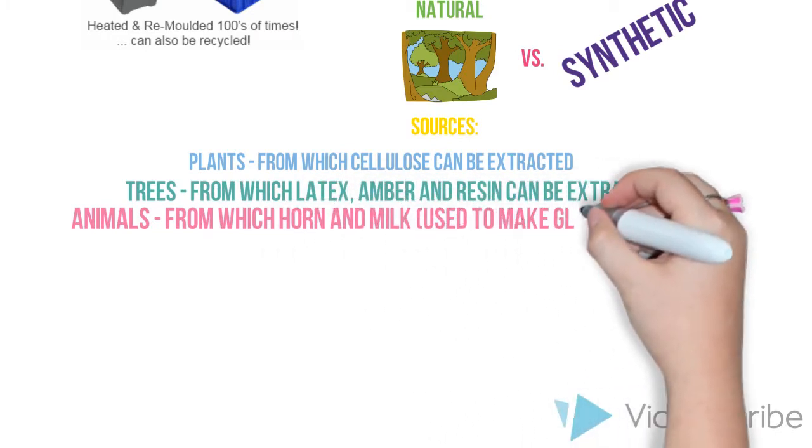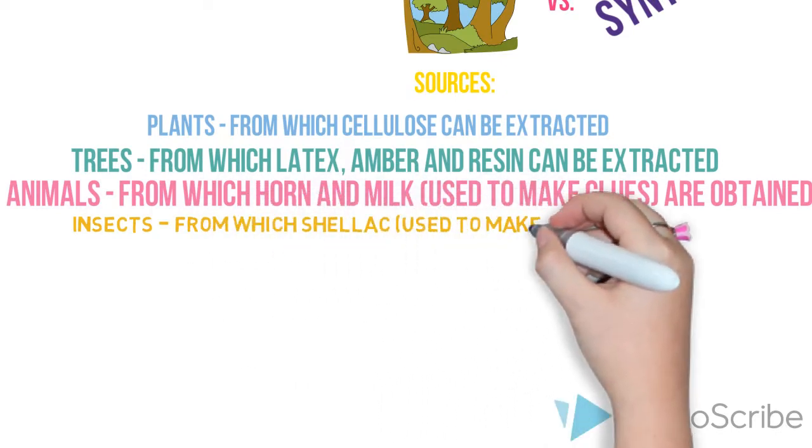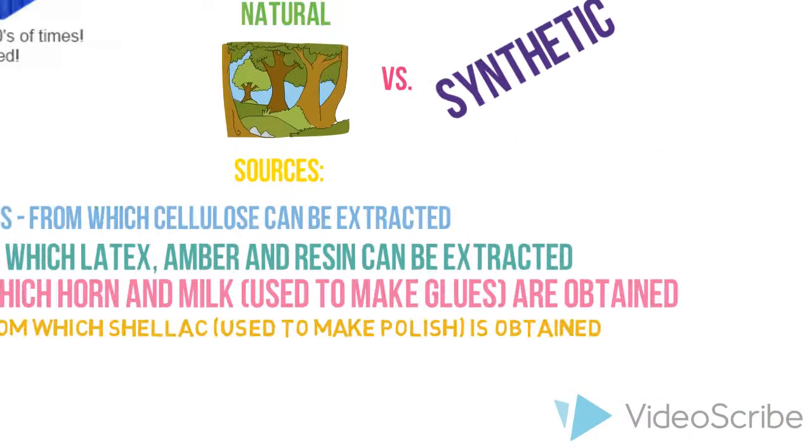Animals, from which horn and nook used to make glues are obtained, and insects, from which shellac used to make polish is obtained.